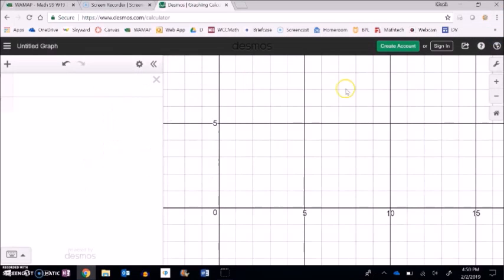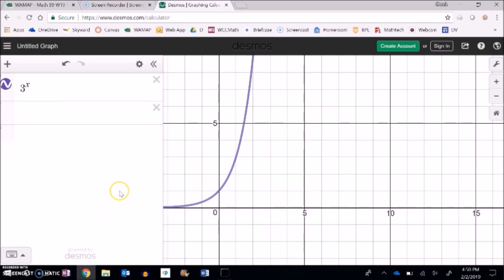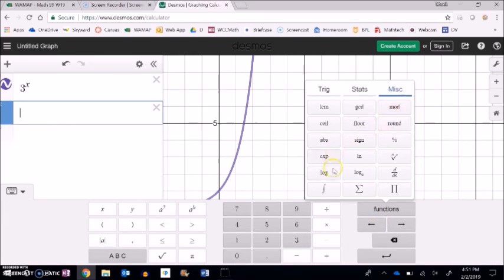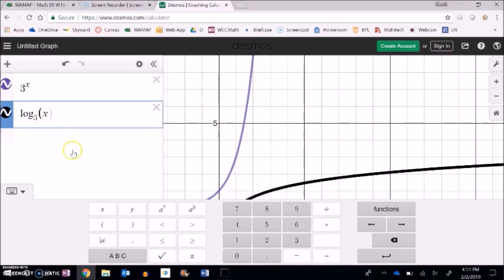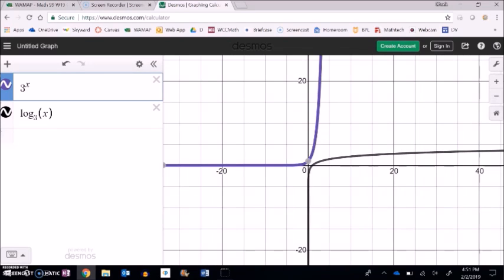We can see that in graphs, in the graphs of them. If I were to graph 3 to the x, it looks like this. Here it is. And if I were to graph log base 3 over here in miscellaneous, log base 3 of x, it's this. And remember that functions and their inverses are symmetrical across this y equals x line. This point that's at 3, 1 is the point that's 1, 3 here. It mirrors across that. As I zoom out, it looks like that.